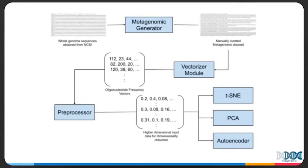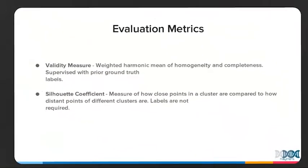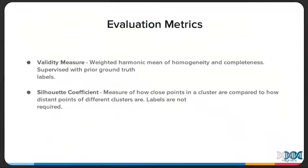Moving on to the results and evaluation. For evaluation purposes, we use two clustering evaluation metrics: V-measure, an extrinsic metric, and silhouette coefficient, an intrinsic metric.